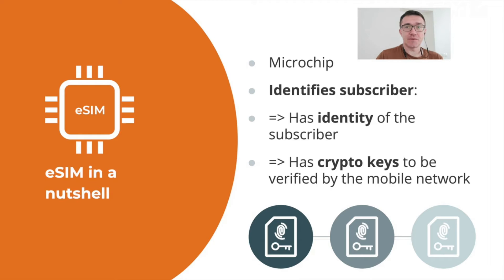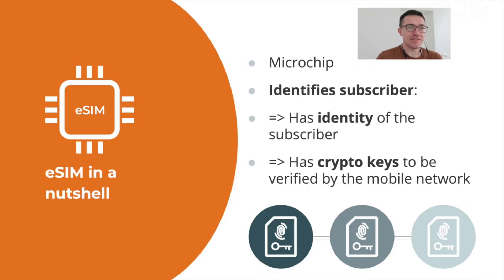But an eSIM is configured over the air after the card is issued, so it requires data links. From the mobile core perspective, when the phone registers with the mobile network, there is no difference. So once you get your eSIM, for the mobile core it will make no difference whether you use an eSIM or a SIM.